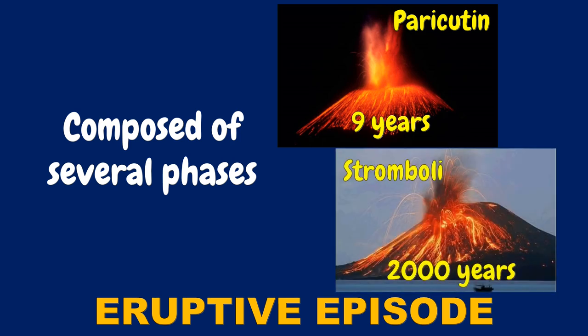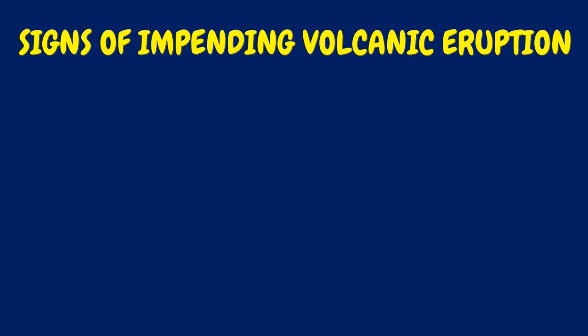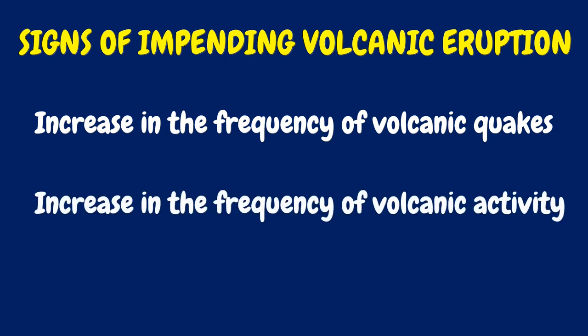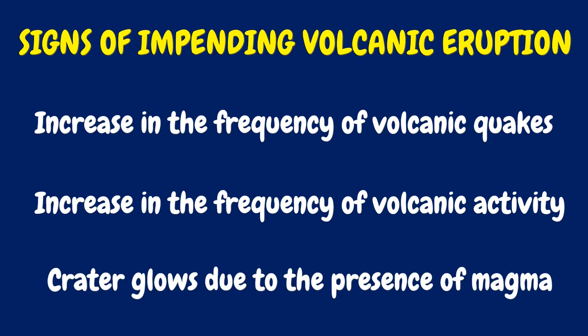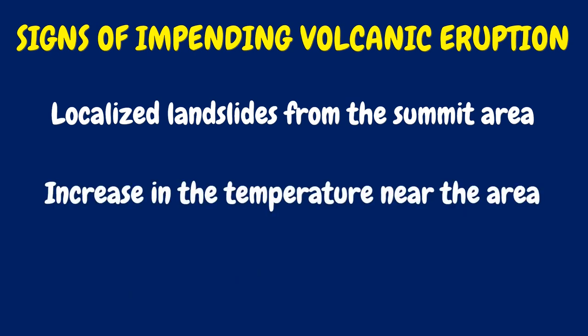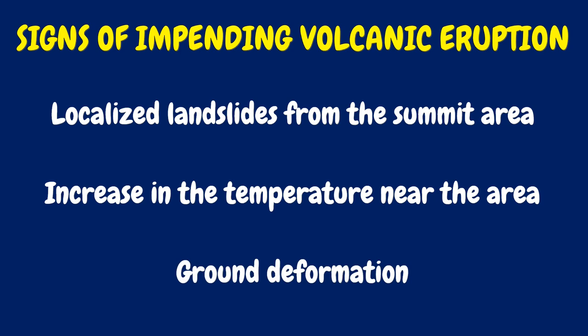What are the signs of an impending volcanic eruption? These include an increase in the frequency of volcanic quakes, increase in volcanic activity, crater glow due to the presence of magma, localized landslides from the summit area, increase in temperature near the area, and ground deformation.